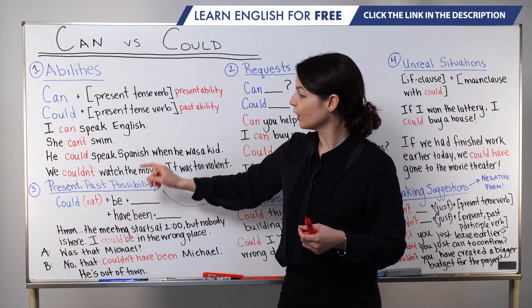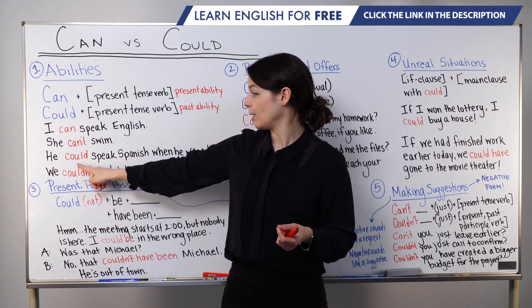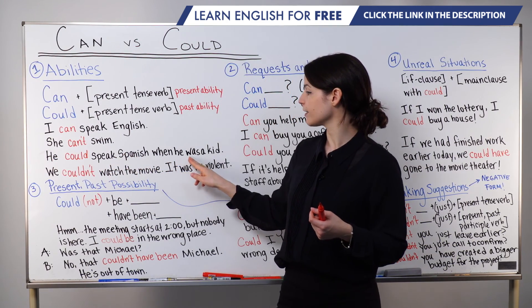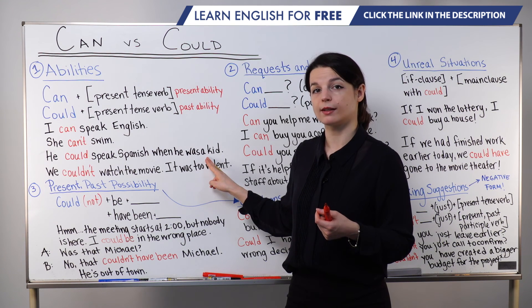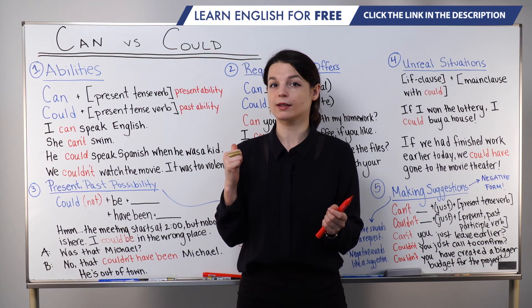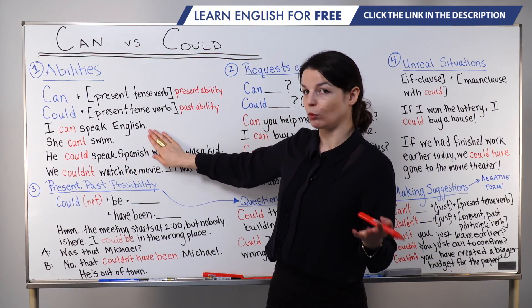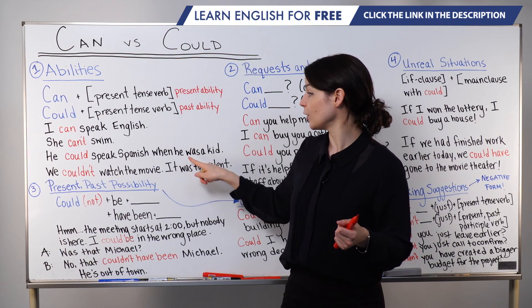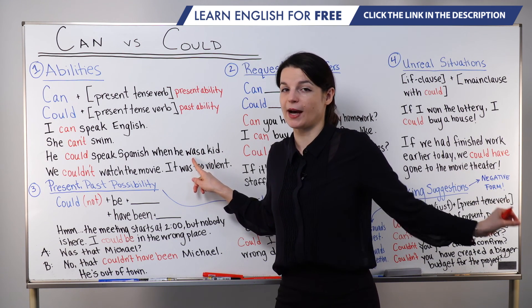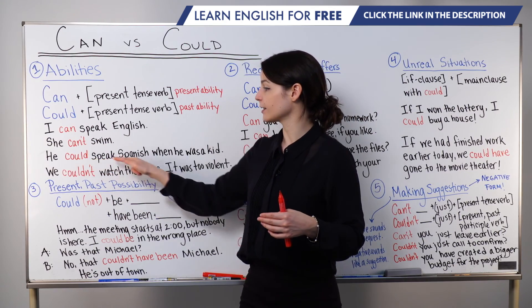Let's compare this to using could to make past tense expressions. Could will change from can to could, but the verb does not change. He could speak Spanish when he was a kid. This is a past tense ability statement. Very common in past ability statements is a point in time: he could speak Spanish when he was a kid — past tense, at that point in time. We'll often include a time period in the past to help us understand this ability.